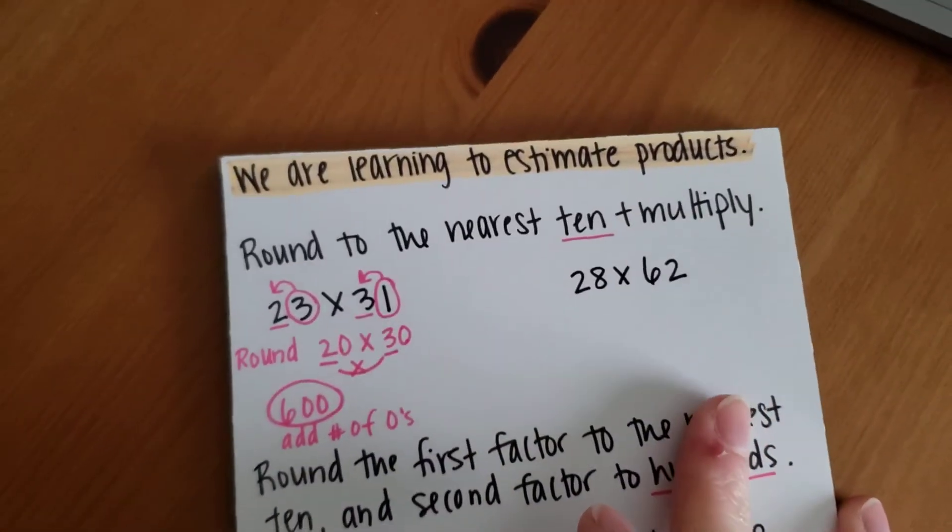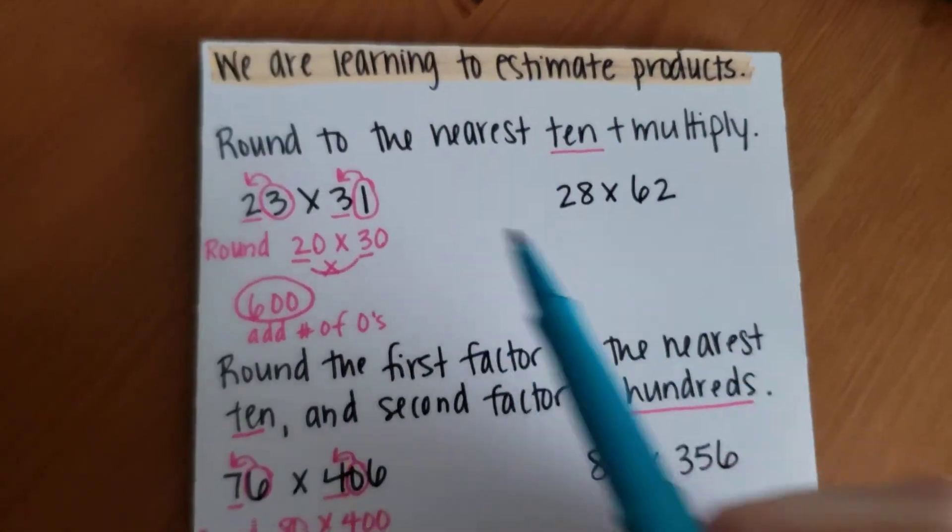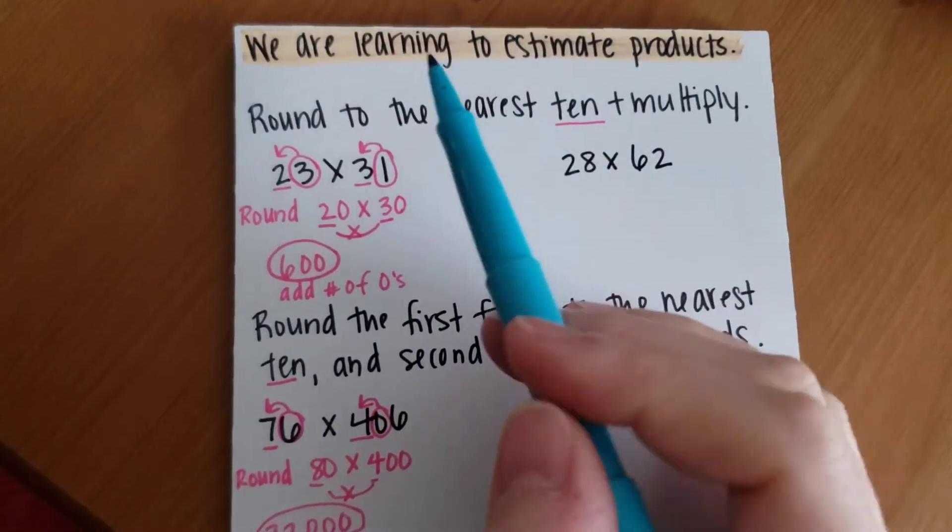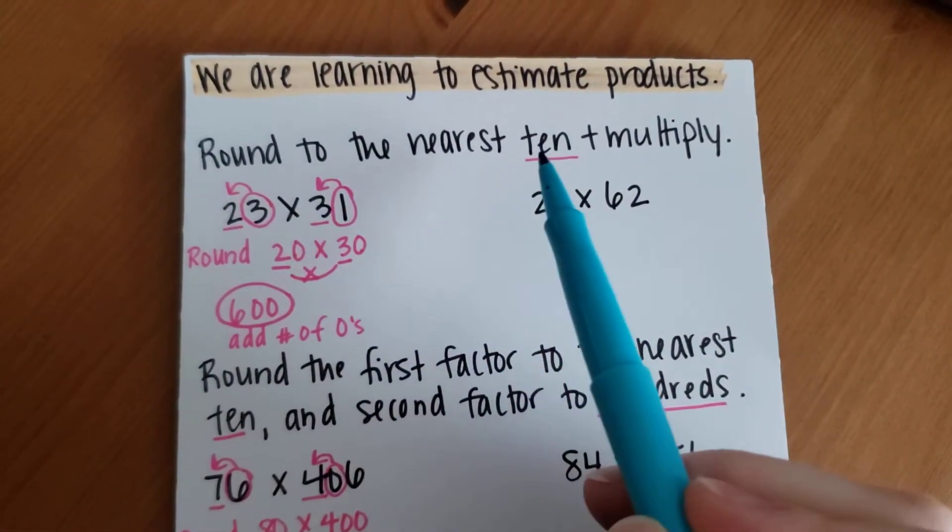We are learning to estimate products. We've done stuff like this before, so this should be fairly easy for you guys. We're going to start by rounding to the nearest 10 and multiply.